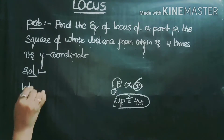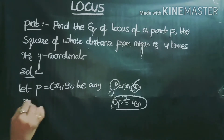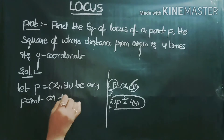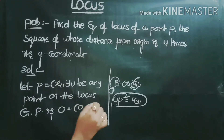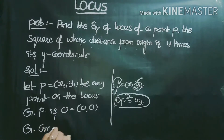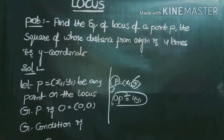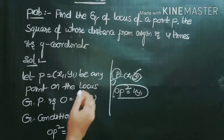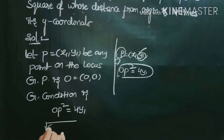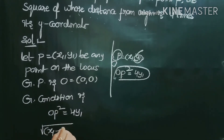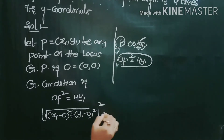Let P = (x1, y1) be any point on the locus, and the given point is the origin O = (0, 0). The given condition is OP² = 4y1. Now OP is the distance between P and O: OP = √((x1−0)² + (y1−0)²). Squaring: x1² + y1² = 4y1.